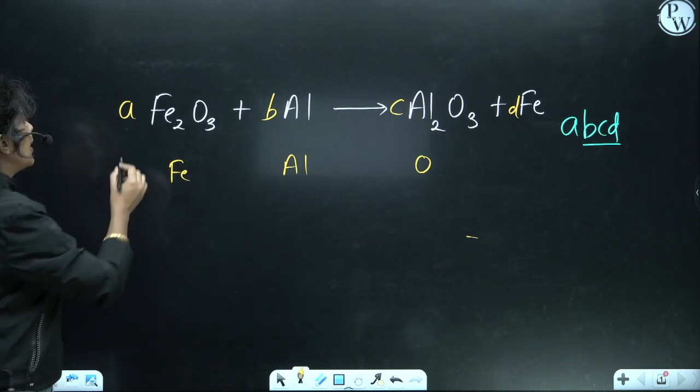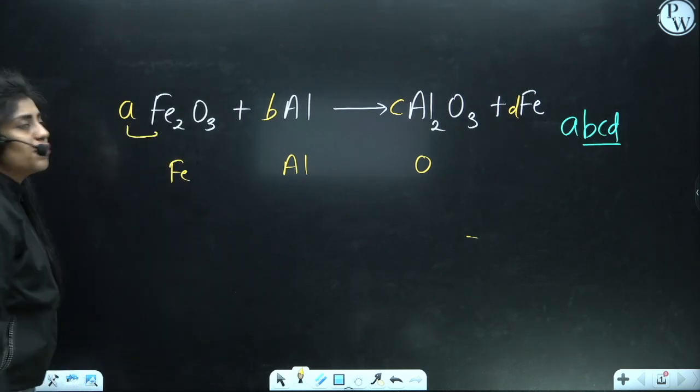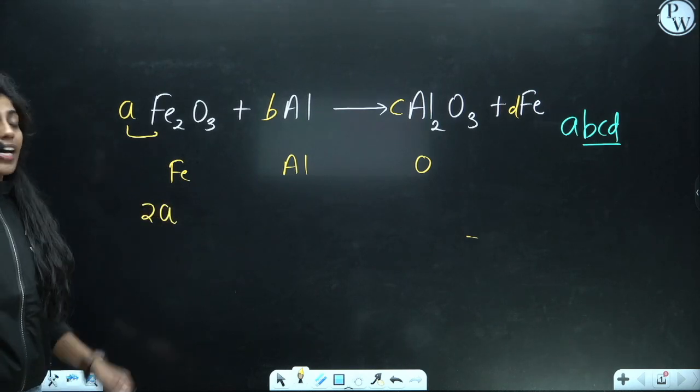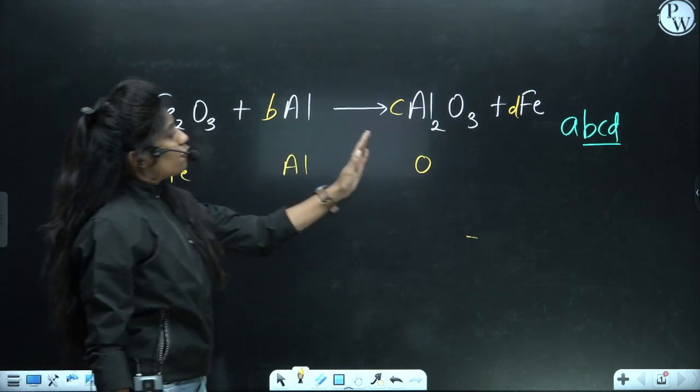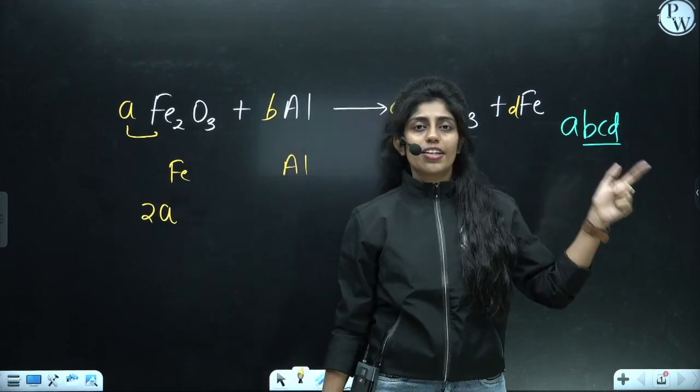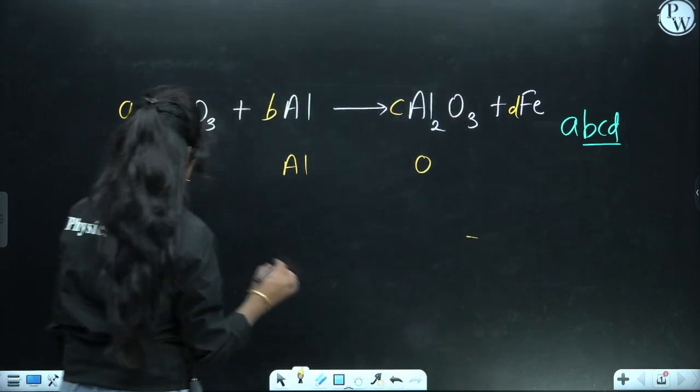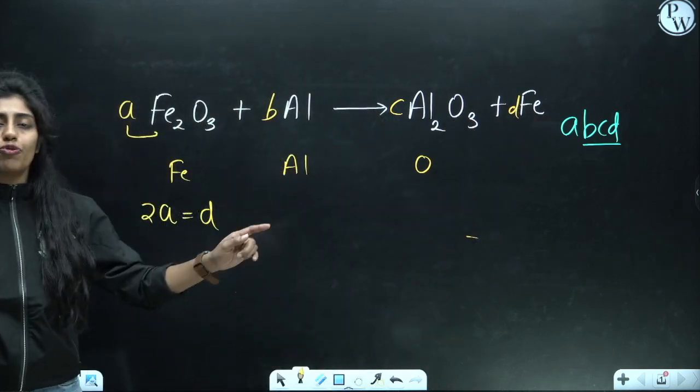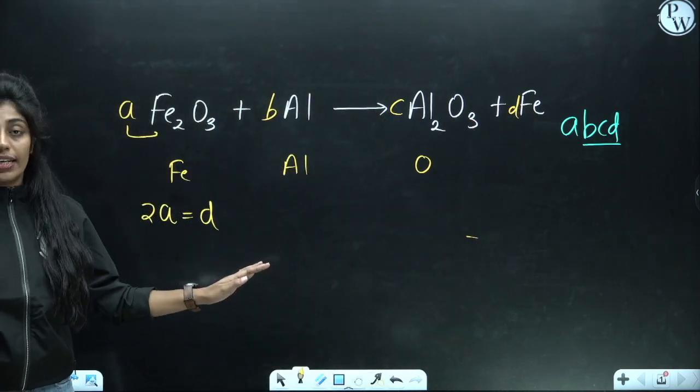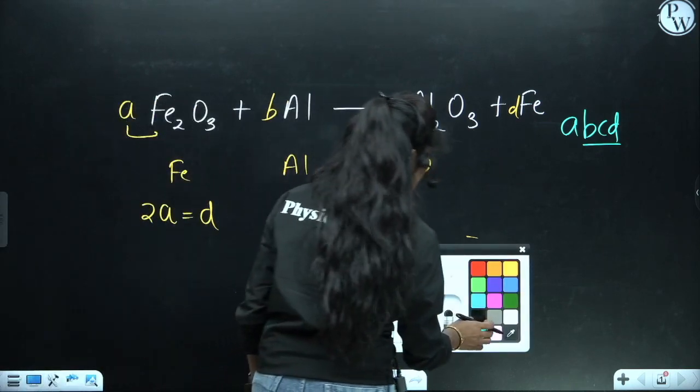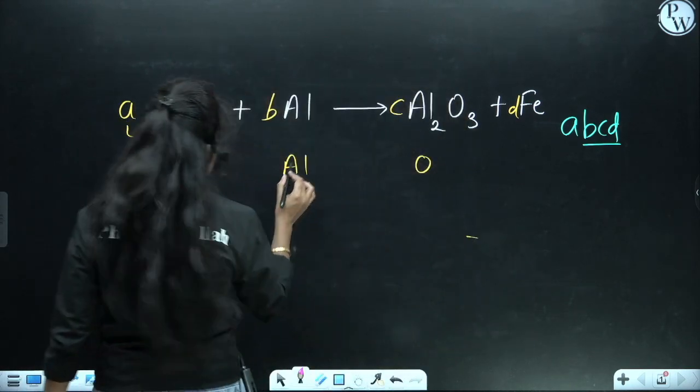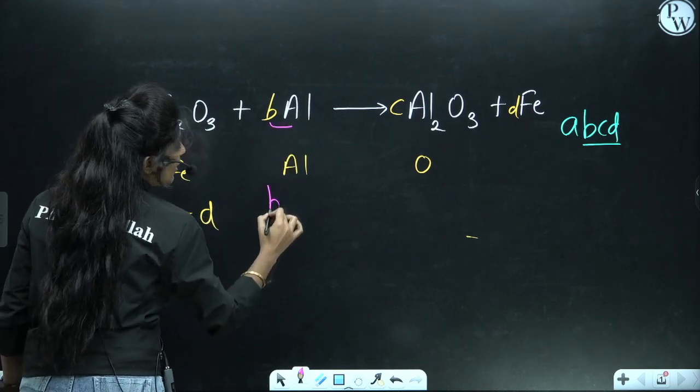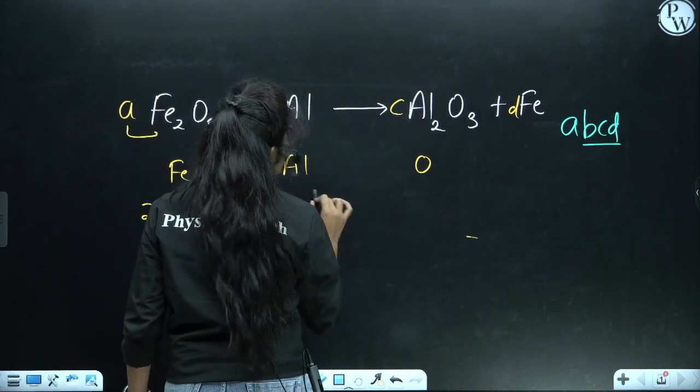Now where can I see Fe? That is on the product side, and it's only equal to d. So I can multiply it by the coefficient, it will be equal to d, right? Are you getting this? Now I am having aluminum, so for aluminum I am having the coefficient b, that is equal to 2c.